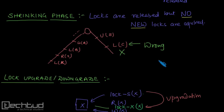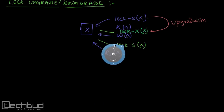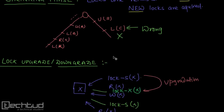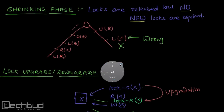The problem with this two-phase locking is that it ensures serializability, but we have a problem of deadlock and cascading rollback. Another thing we should know is what is a lock point.